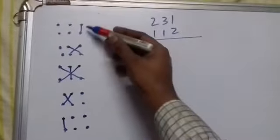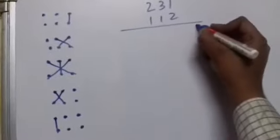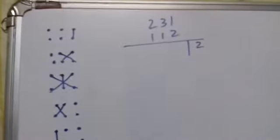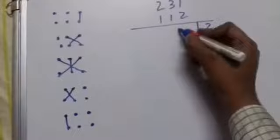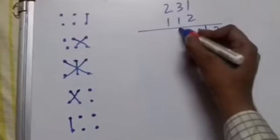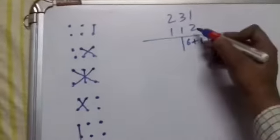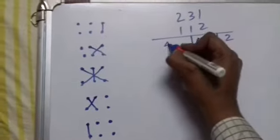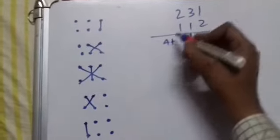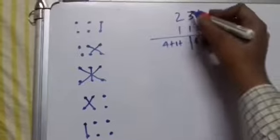First, this into this: 2 times 1 equals 2. Next, 3 times 2 equals 6 plus 1 times 1 equals 1. Next, 2 times 2 equals 4 plus 1 times 1 equals 1 plus 3 times 1 equals 3.